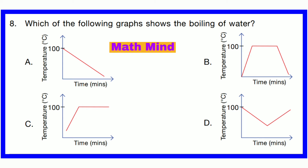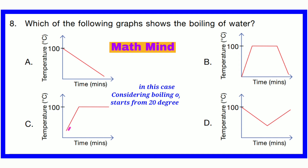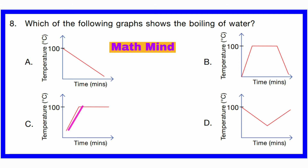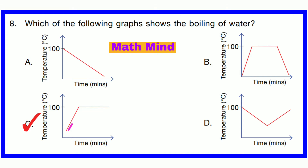Question number 8. Which of the following graphs shows the boiling of water? This line represents a constant increase of temperature. This line represents a constant decrease of temperature. And this line represents a constant temperature, meaning no increase and no decrease. Now, regarding boiling of water: boiling starts from room temperature, let it be 20 degrees Celsius. It definitely increases up to 100 degrees Celsius, because 100 degrees is the boiling point of water. At 100 degrees, temperature cannot increase or decrease. So option C is correct.